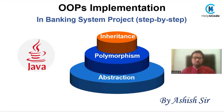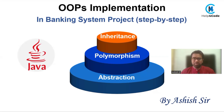We are going to create a Java project in a banking system. Here we are going to use three pillars: inheritance, polymorphism, and abstraction. We will also use the super constructor, super method, runtime polymorphism, and compile-time polymorphism like function overloading and function overriding.